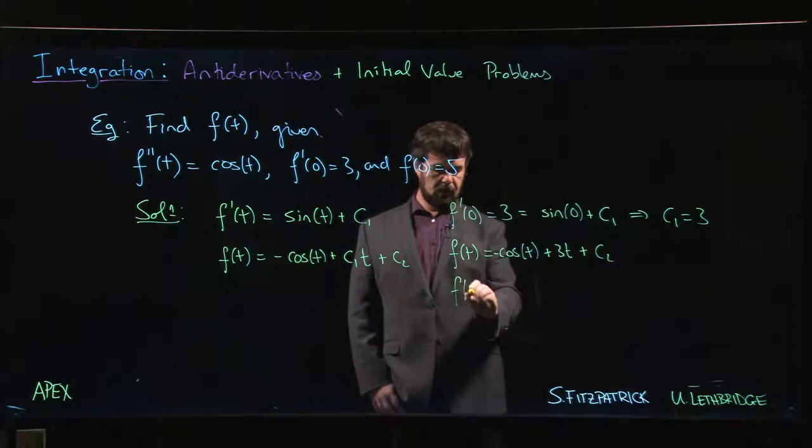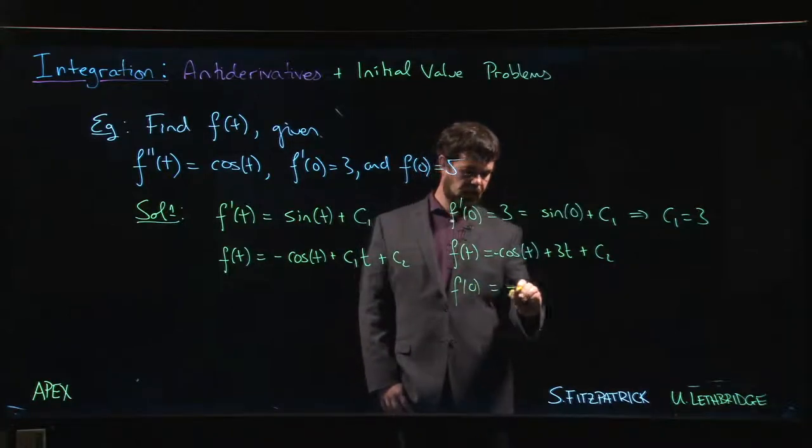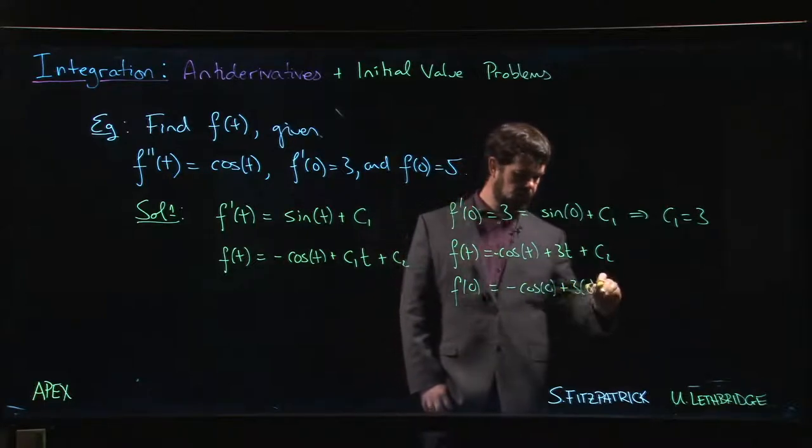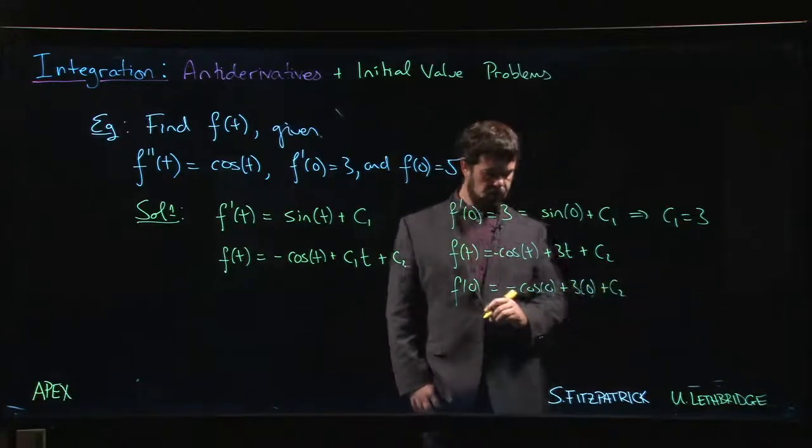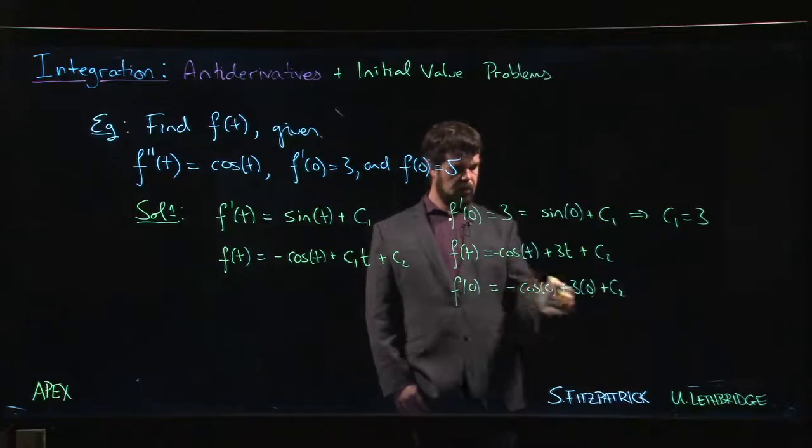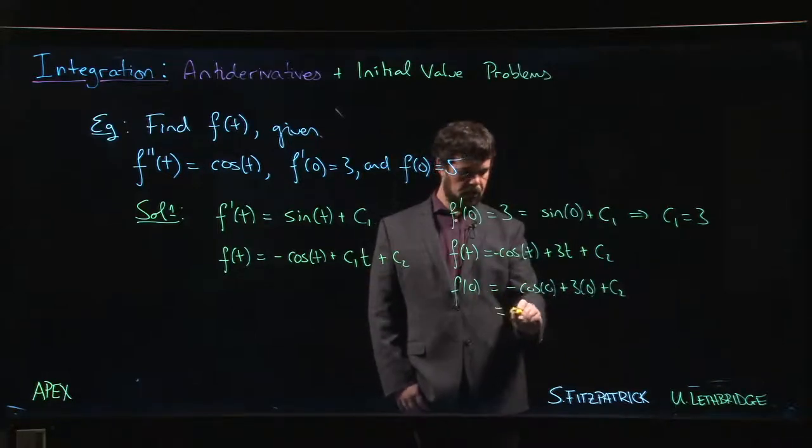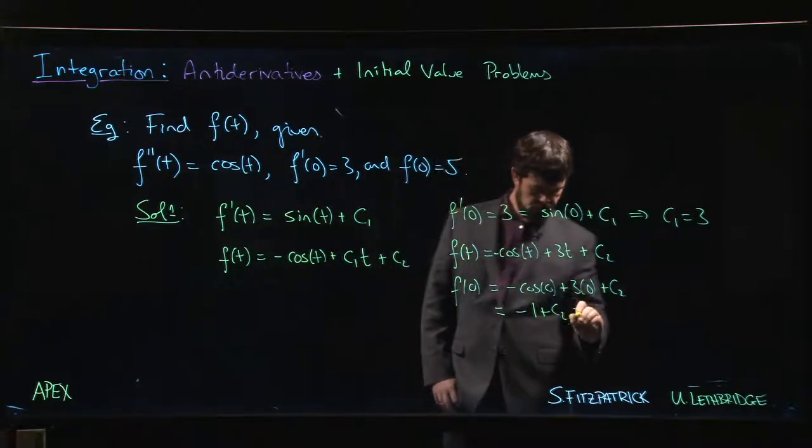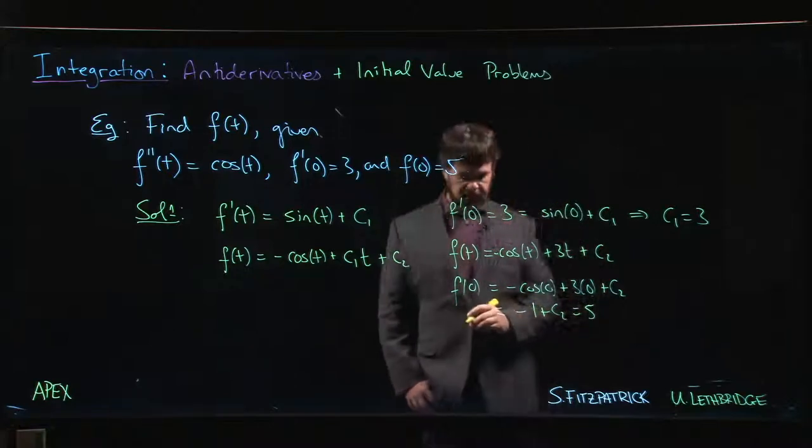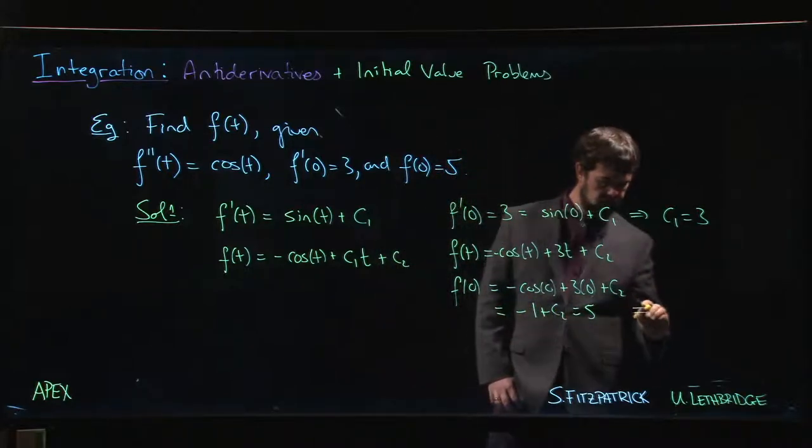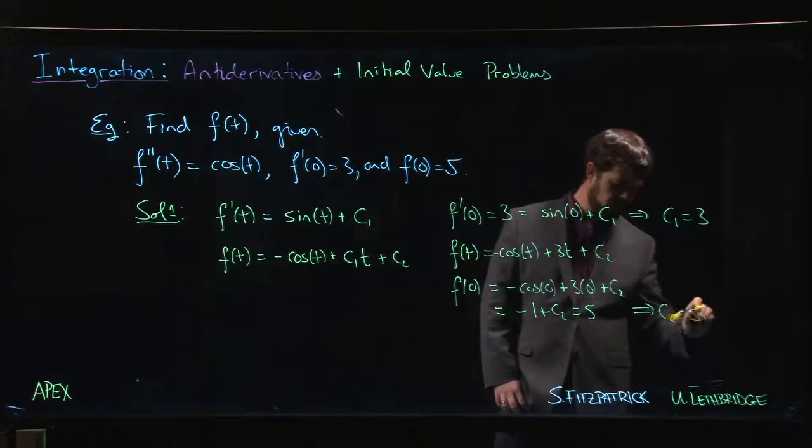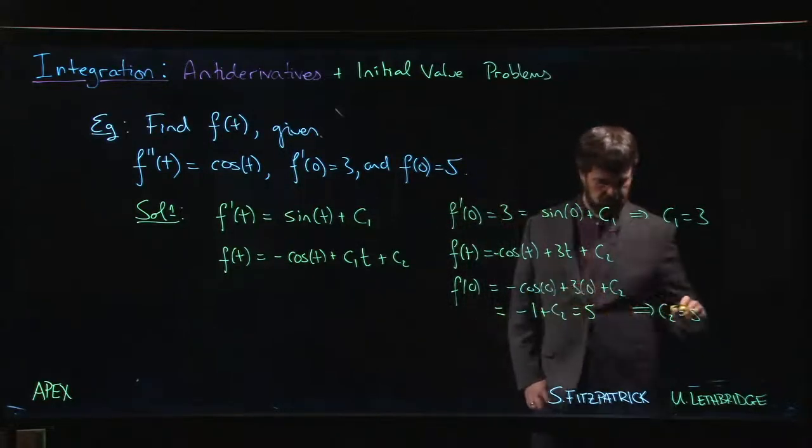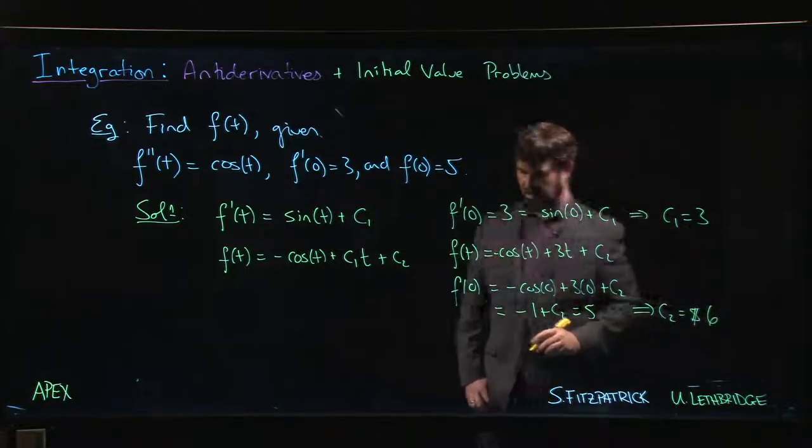But we do know that f of zero should be minus cos zero plus three times zero plus c2. So this works out to minus one plus c2, and this is supposed to add up to give me five. And that tells me that c2 is going to have to be, sorry, six. Add the one. Six.